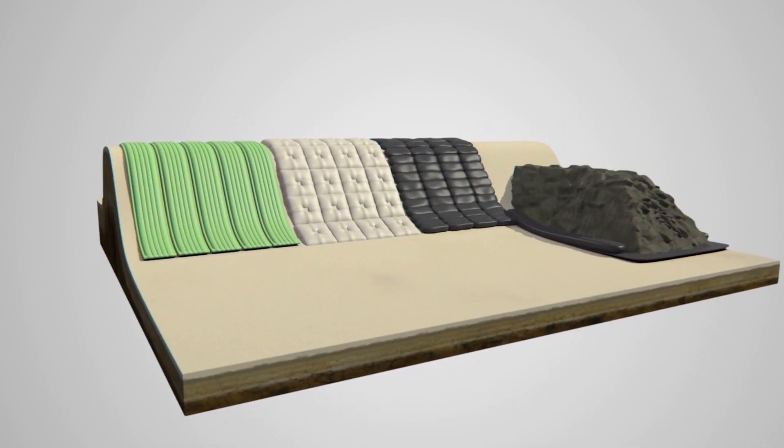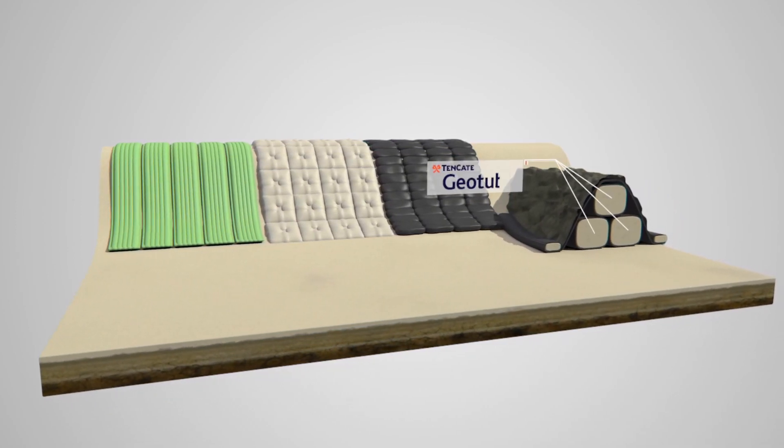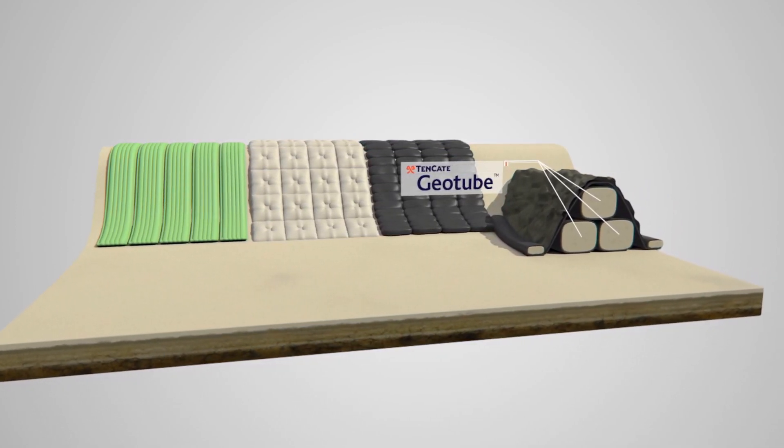Groins made with Tenkata Geotube Systems reduce the impact of high volumes of water flow and the lateral drift of sand.